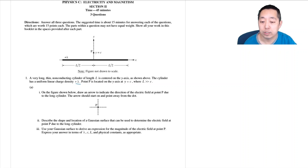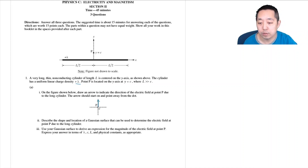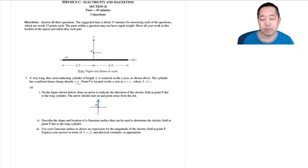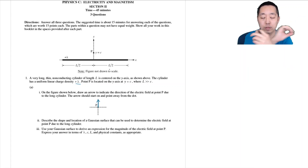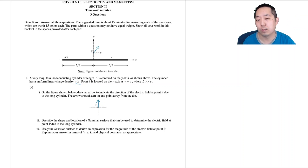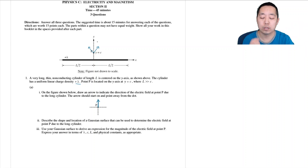In the figure shown below, indicate the direction of the electric field at point P due to the long cylinder — the arrow should start on and point away from the dot. Because this is really long, the electric field is pointing directly upward away from the positive charges. We determine this by symmetry: if I were to flip this thing over and around, I would have the same picture. If there were some horizontal component and I flipped it, I'd get a contradiction, so symmetry tells us it must be vertically upward.